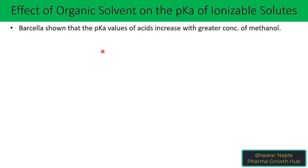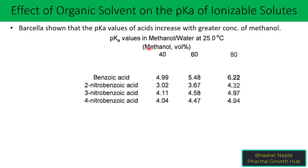Bercela showed that the pKa values of acids increase with greater concentration of methanol. Four examples are given in the table: benzoic acid, 2-nitrobenzoic acid, 3-nitrobenzoic acid, and 4-nitrobenzoic acid. At 40% methanol, benzoic acid has a pKa of 4.99; at 60% methanol it is 5.48; and at 80% methanol it is 6.22. With the increase in methanol concentration, a similar increase in pKa values of acidic compounds is noted, and similar observations hold for the other three compounds.